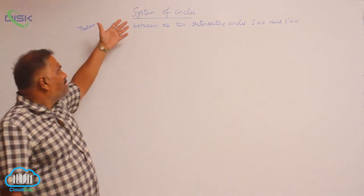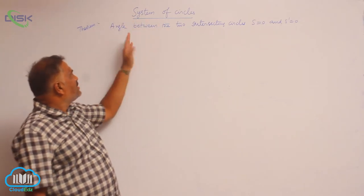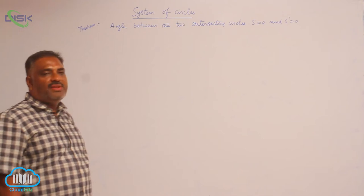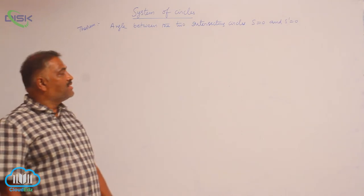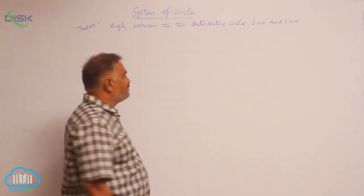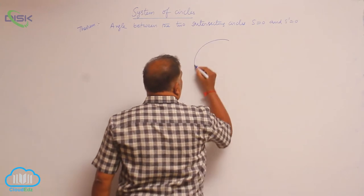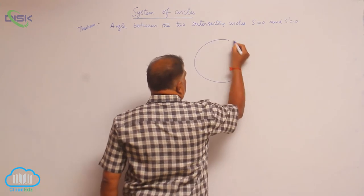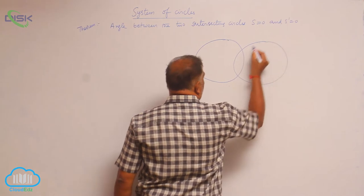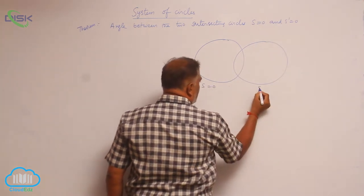Under the contents system of circles, let us discuss the angle between two circles, particularly the angle between two intersecting circles. Let us take two circles, S = 0 and S' = 0.